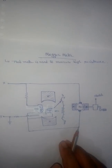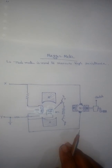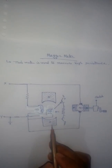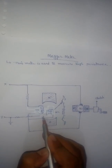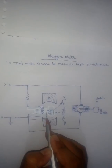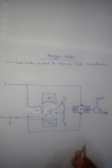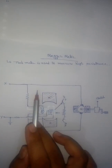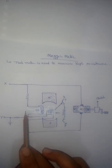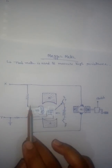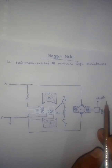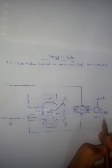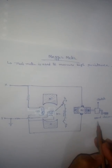First of all, we have to see the constructional diagram of the Megger. Observe this circuit diagram — this is a typical circuit diagram for a Megger. It consists of two parts: this part is known as the movement system, and this one is known as the hand-driven generator.